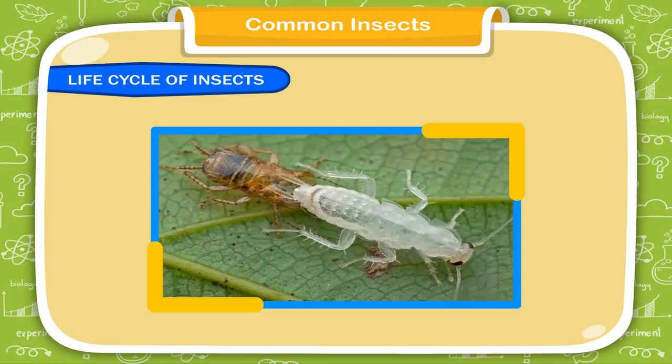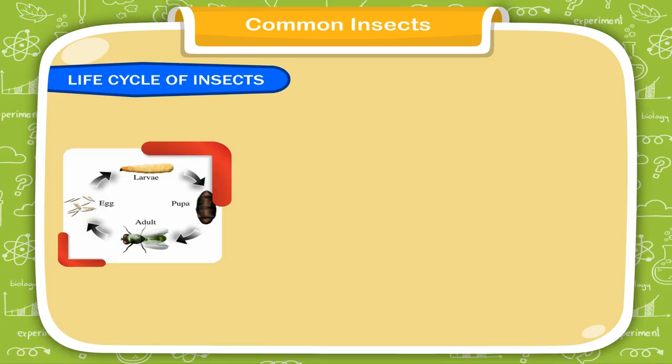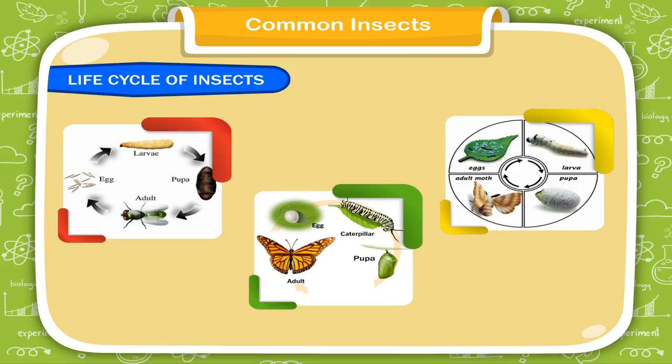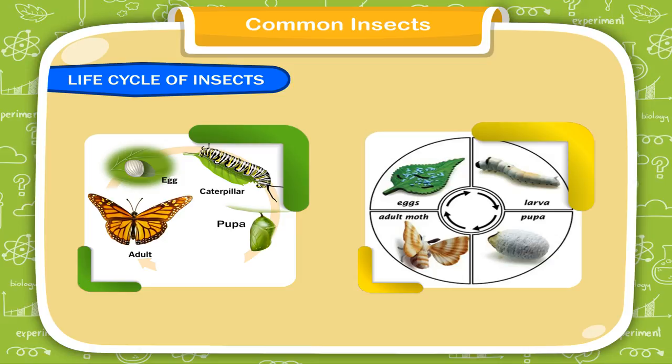The shedding of old skin is called molting. Insects like houseflies, butterflies, and silkworms pass through four stages: egg, larva, pupa, and adult in their life cycle. Butterflies and moths lay eggs on the upper surface of leaves.